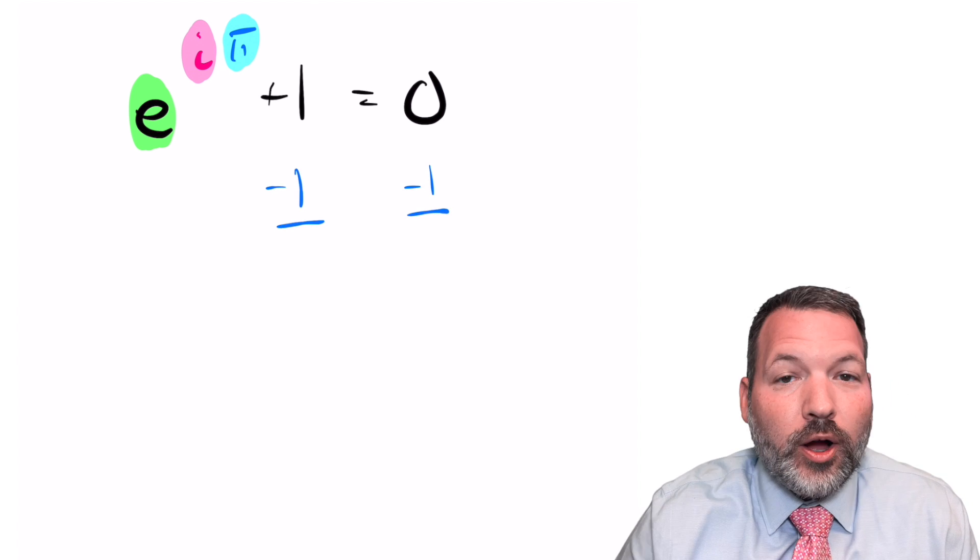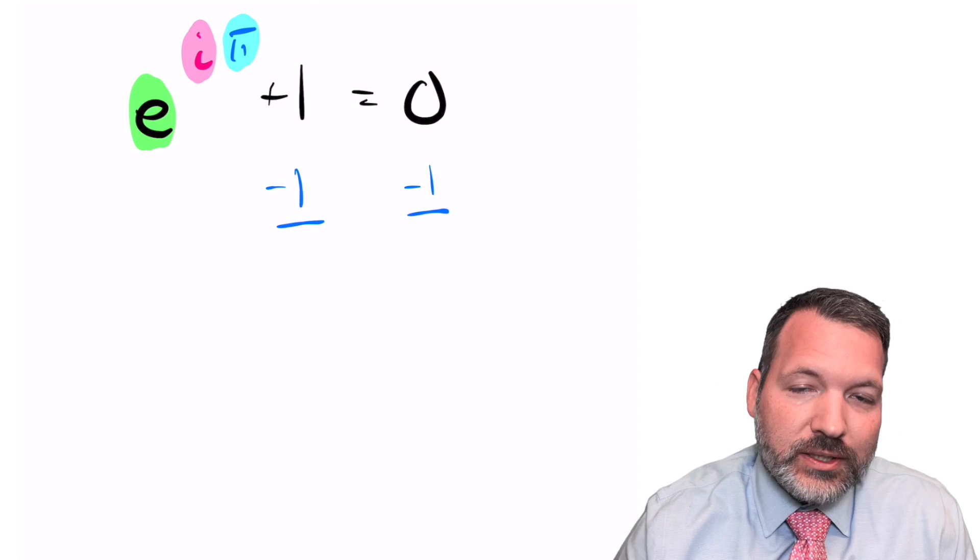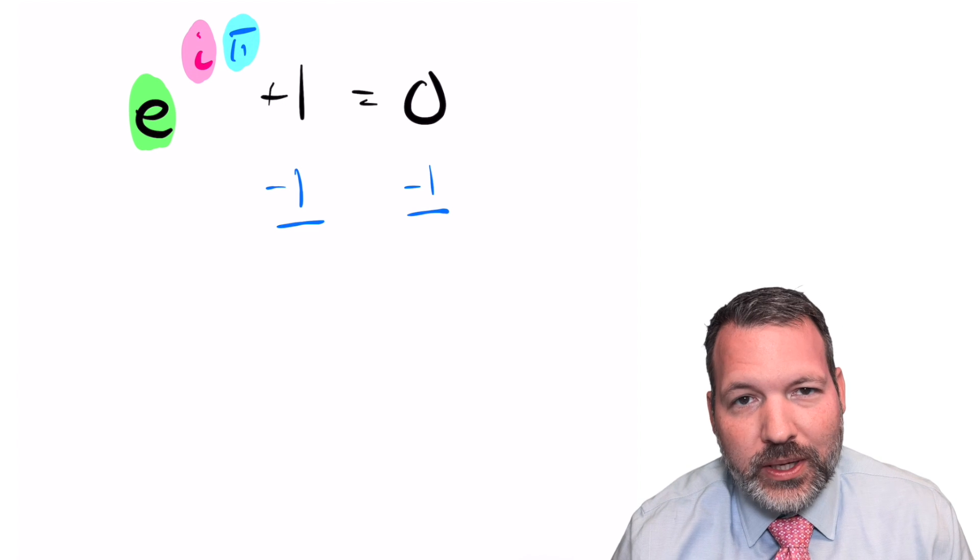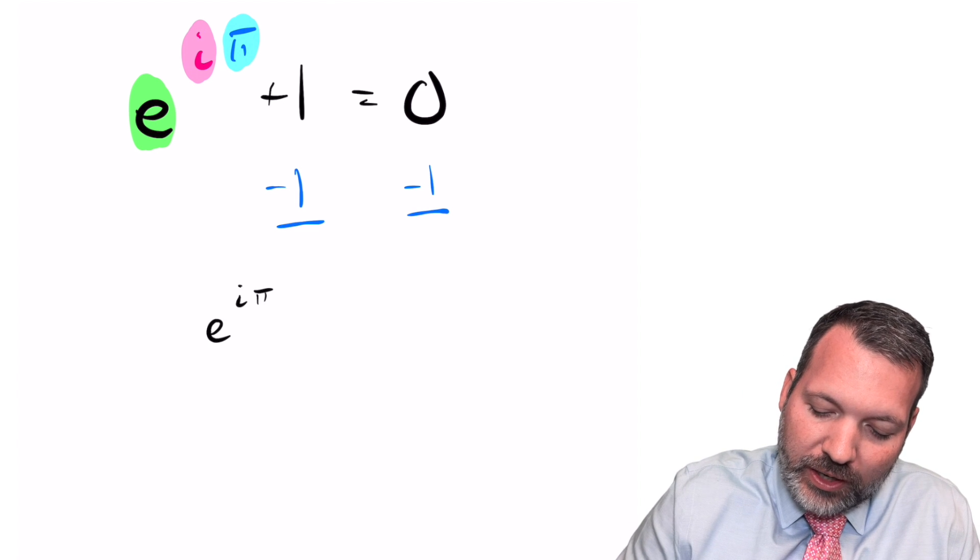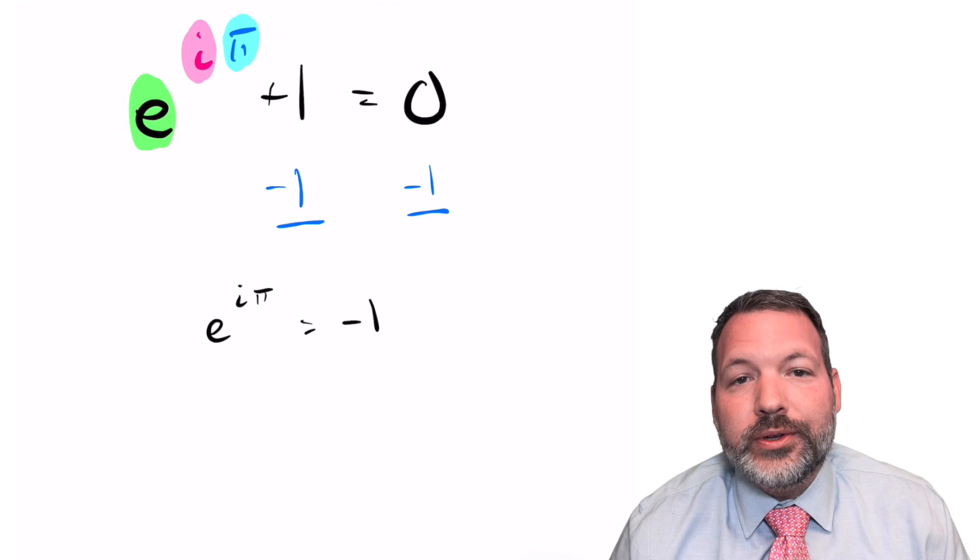In fact, that's probably the first thing worth doing here. Although the one and the zero and the presence of this identity are nice, strictly speaking, they're not really necessary. What's actually going on here is E to the i pi equals negative one.